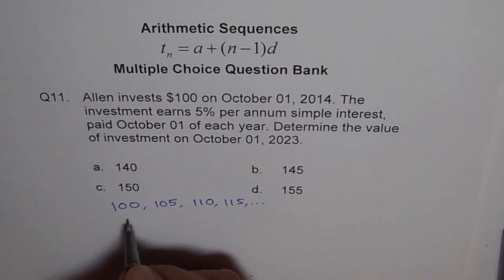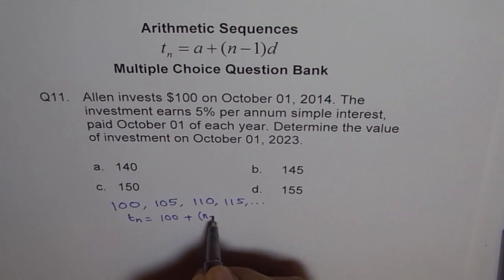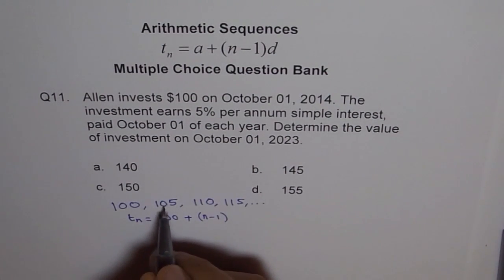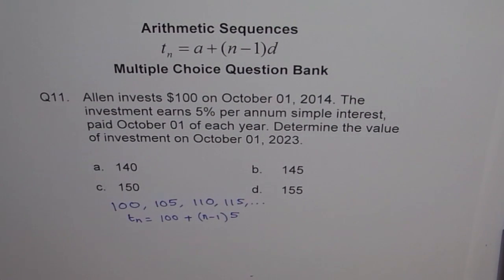So T_n is, first term is 100 plus n minus 1. We will write n minus 1. And d is difference, common difference, which is 5. So that is our formula for this.